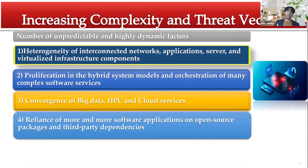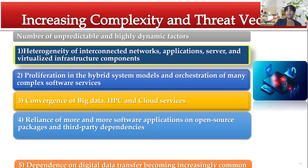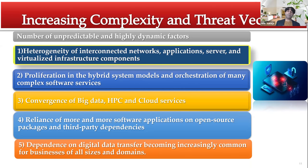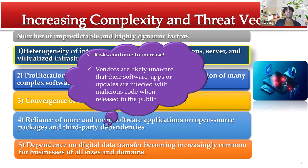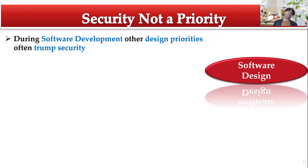More and more applications rely on open-source packages for cost reduction. Third-party dependencies are numerous, and a mirror can duplicate a pre-malicious file. We're all dependent on digital data transfer. Vendors are highly unlikely to know that the software, apps, or updates they're selling or installing are infected by malicious code when released to the public. The core reason is that security is never a priority when developing software.